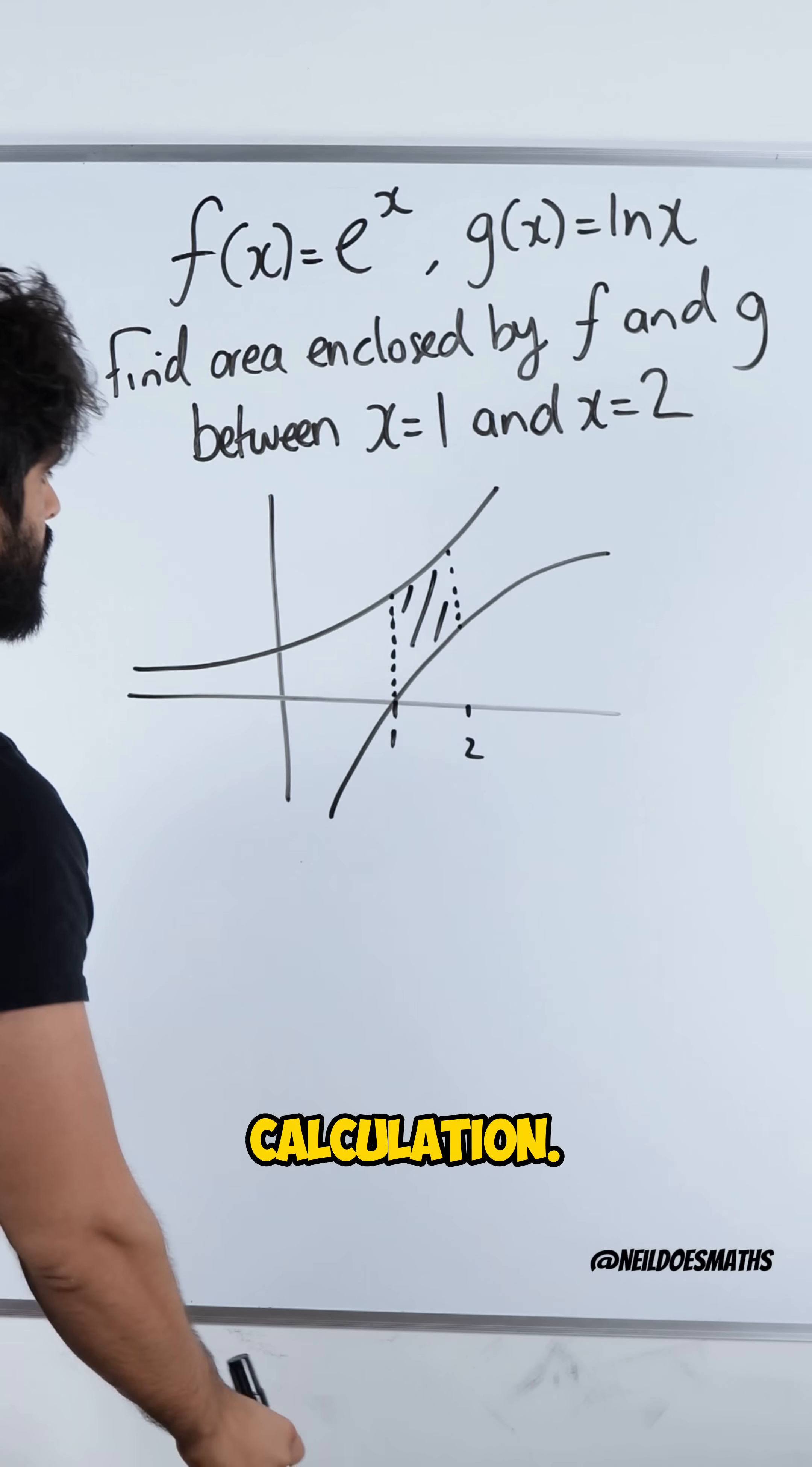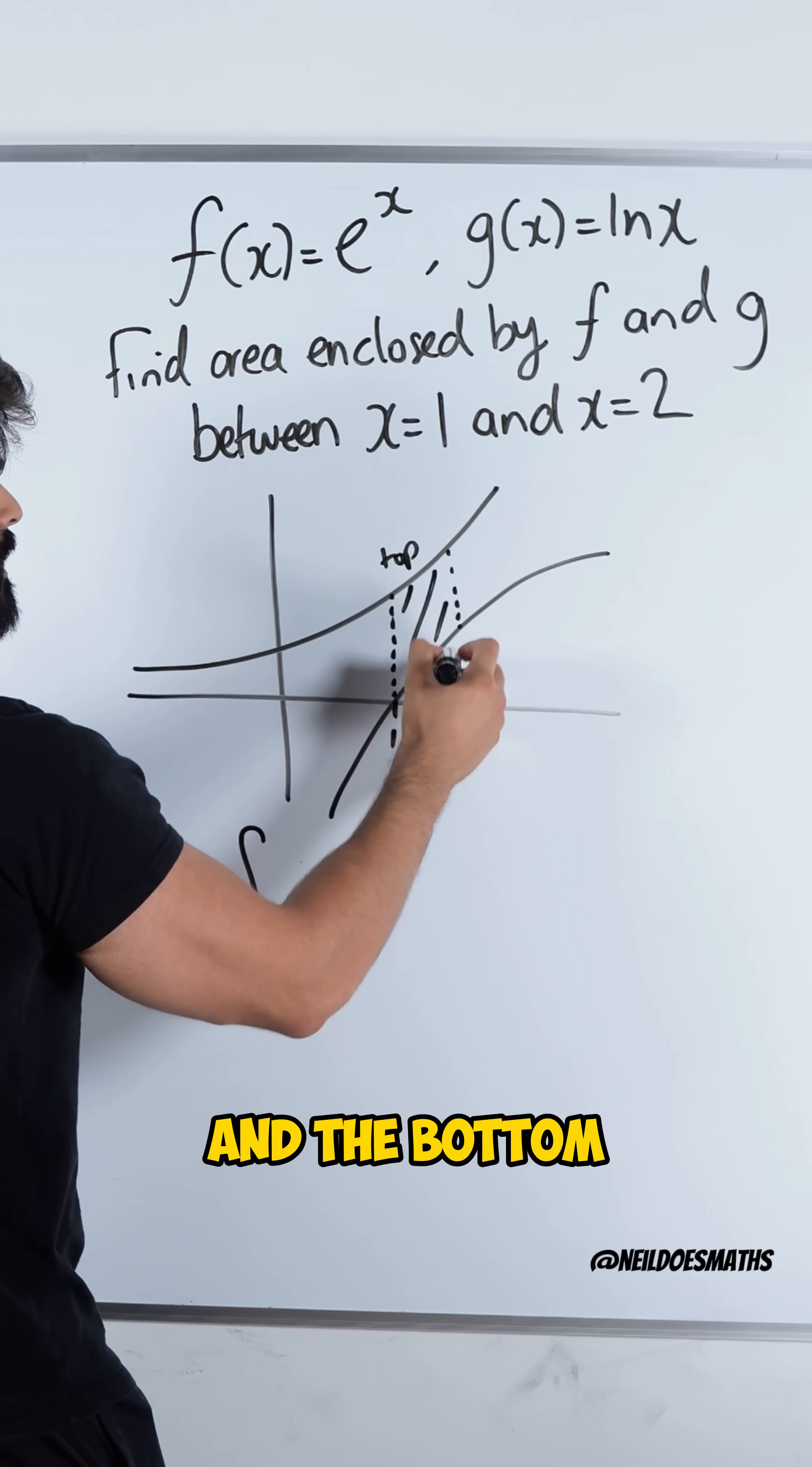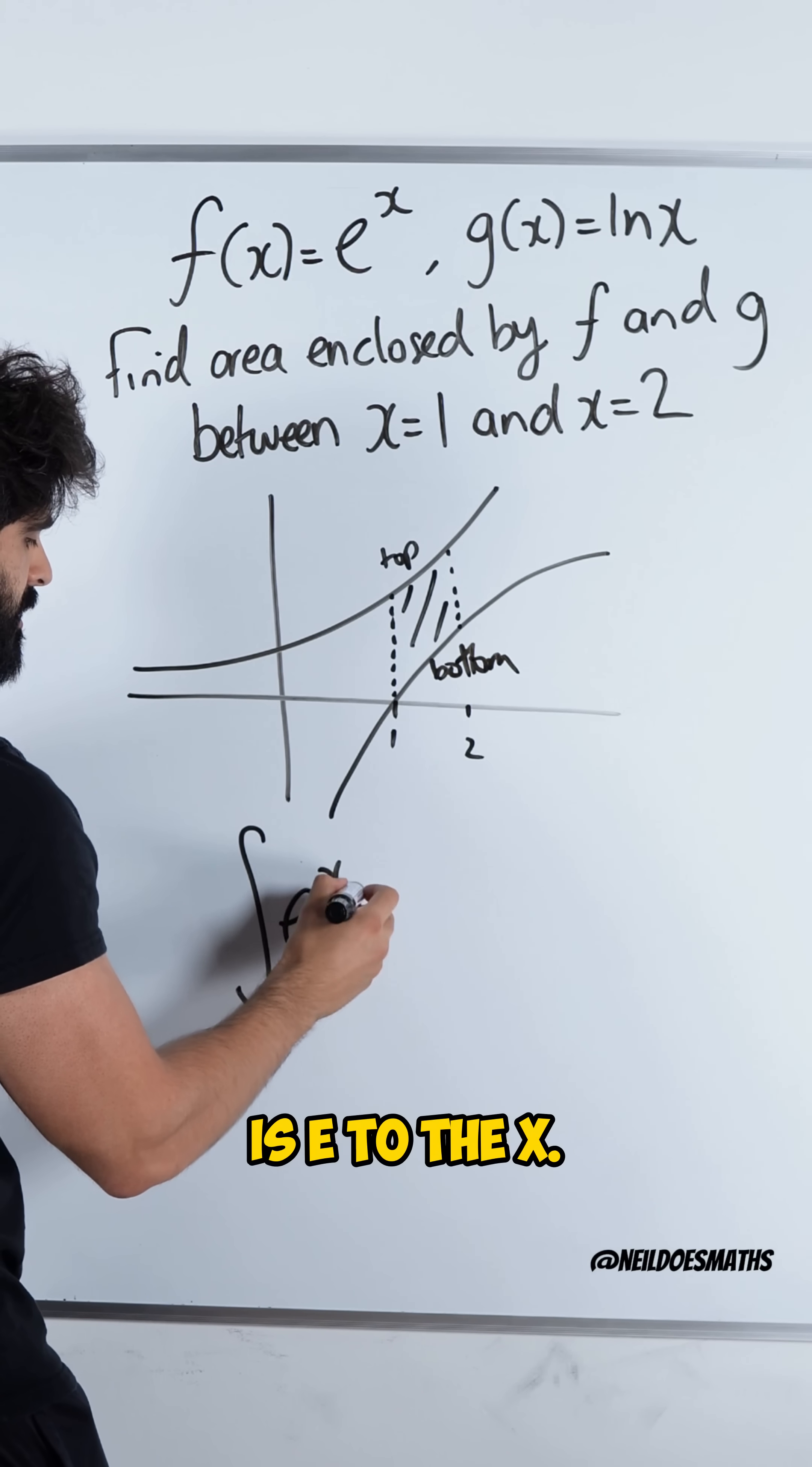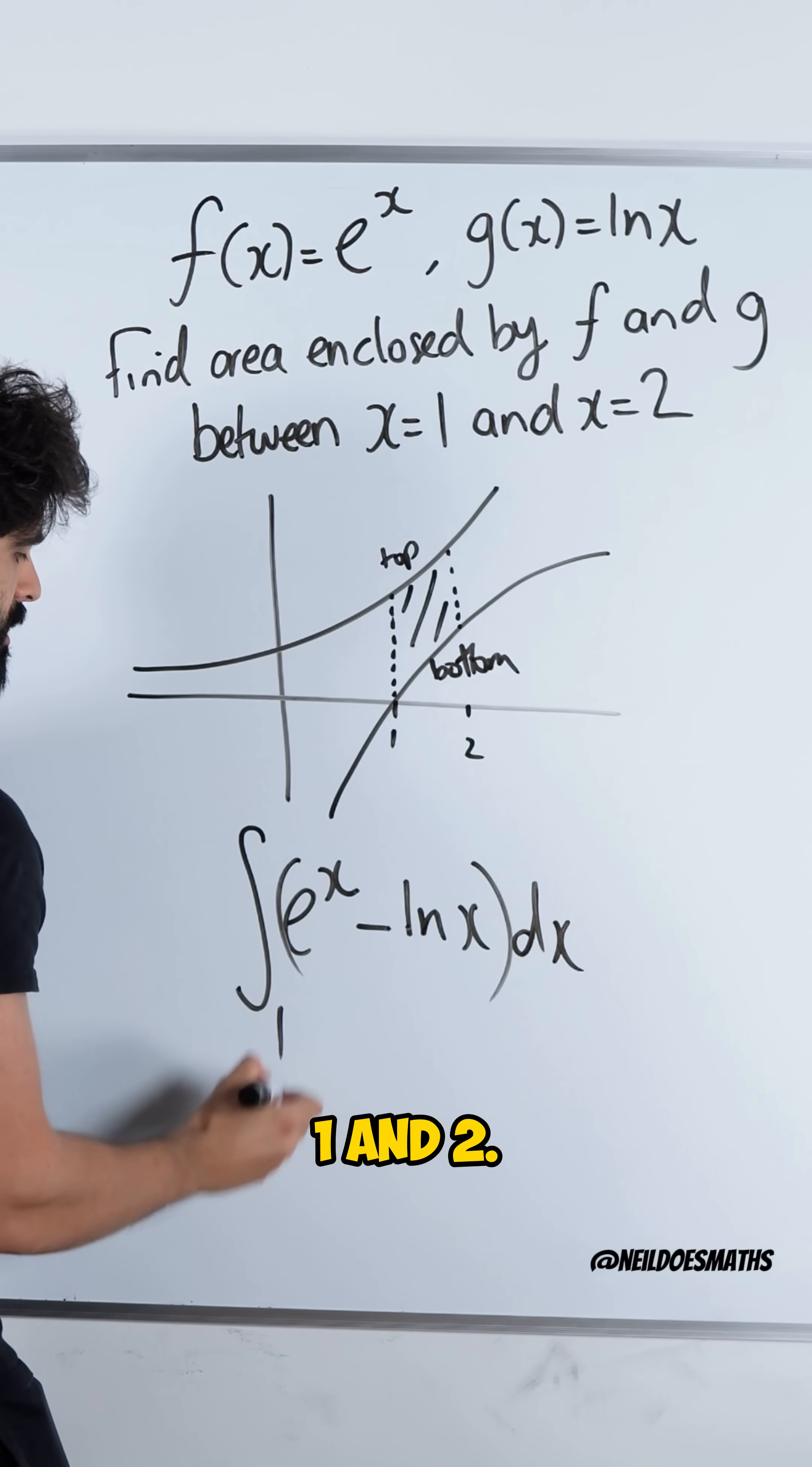And this is quite a simple calculation. Well, to find the area between curves we need to integrate between the top curve and the bottom curve. The top curve is e to the x. Then we're going to subtract the bottom curve, which is ln x dx between 1 and 2.